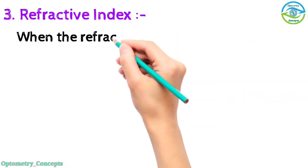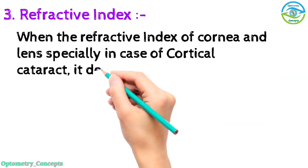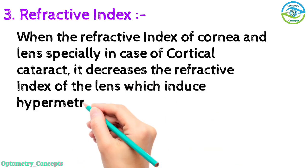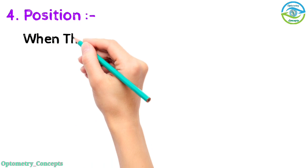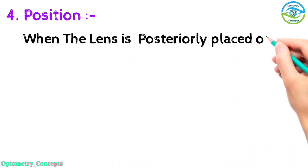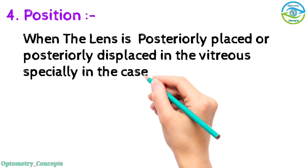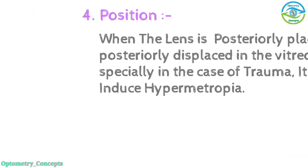Refractive index - when the refractive index of cornea or lens, especially in the case of cortical cataract, decreases the refractive index of the lens, which eventually induces hypermetropia. Position - when the lens is posteriorly placed or posteriorly displaced in the vitreous, especially in the case of trauma, it can induce hypermetropia.